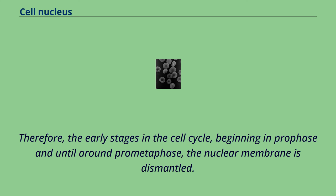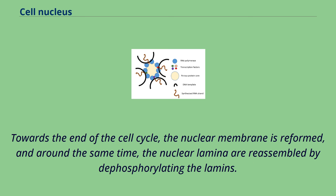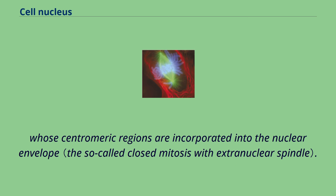During the same period, the nuclear lamina is also disassembled, a process regulated by phosphorylation of the lamins by protein kinases such as the CDC2 protein kinase. Towards the end of the cell cycle, the nuclear membrane is reformed, and around the same time, the nuclear lamina are reassembled by dephosphorylating the lamins. However, in dinoflagellates the nuclear envelope remains intact, the centrosomes are located in the cytoplasm, and the microtubules come in contact with chromosomes whose centromeric regions are incorporated into the nuclear envelope. In many other protists and fungi, the centrosomes are intranuclear, and their nuclear envelope also does not disassemble during cell division.